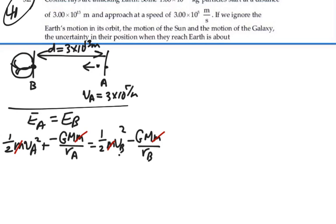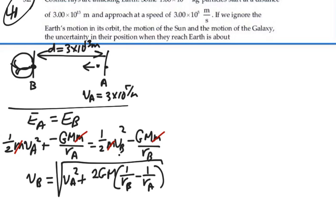So we will have, multiply both sides by 2, take the square root, velocity of B is going to equal the velocity of A squared plus 2G mass of Earth, 1 over the radius at B minus 1 over the radius at A, all that square root.